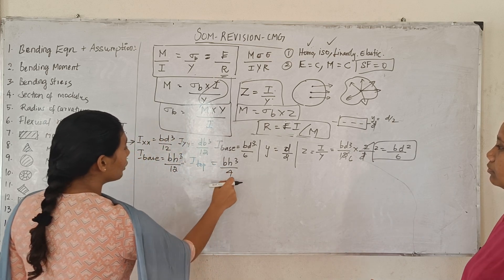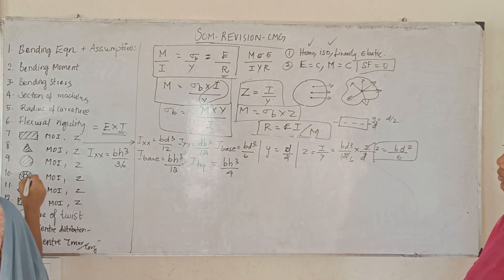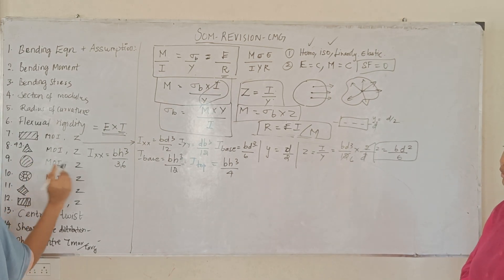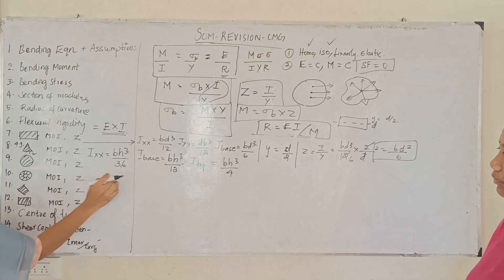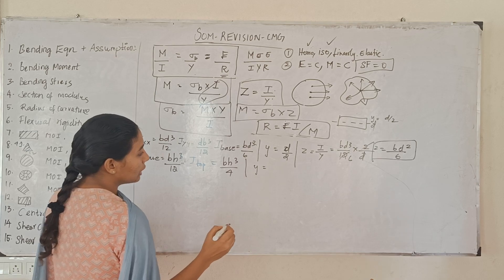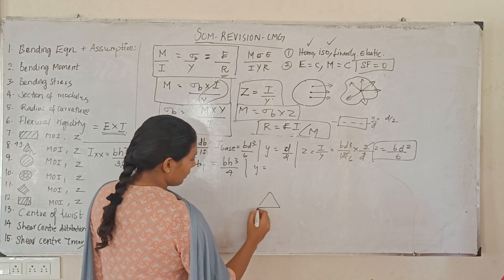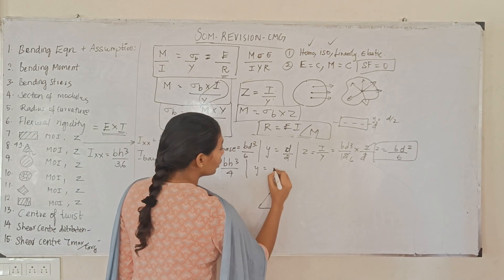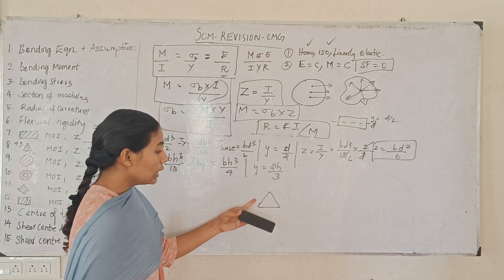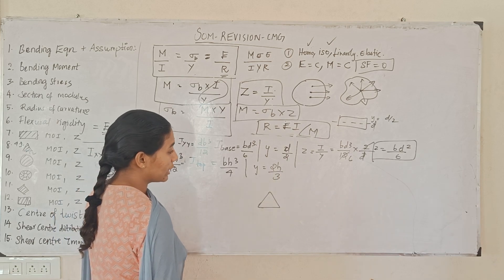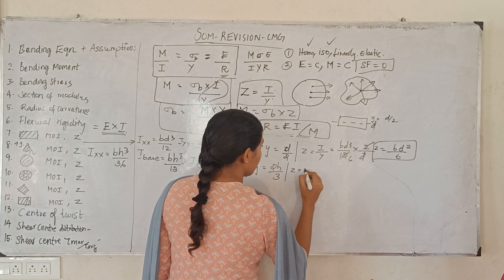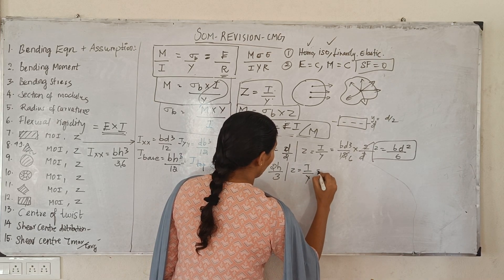For a triangle about the top: I equals B·H³ divided by 12. The distance y from the neutral axis to the base is 2H by 3.